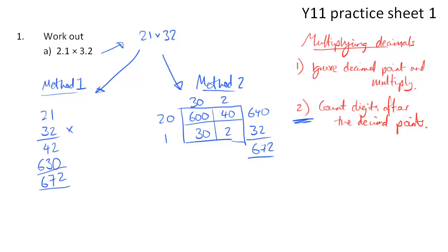Step 2 is to count the digits. If you look at the original sum, after the decimal places you have 1 and 2, so you've got a total of 2 digits after the decimal points. So this must be true of the answer of your calculation. If you take 672 and think, well, the 2 and the 7 have to be after the decimal point, your answer must be 6.72.